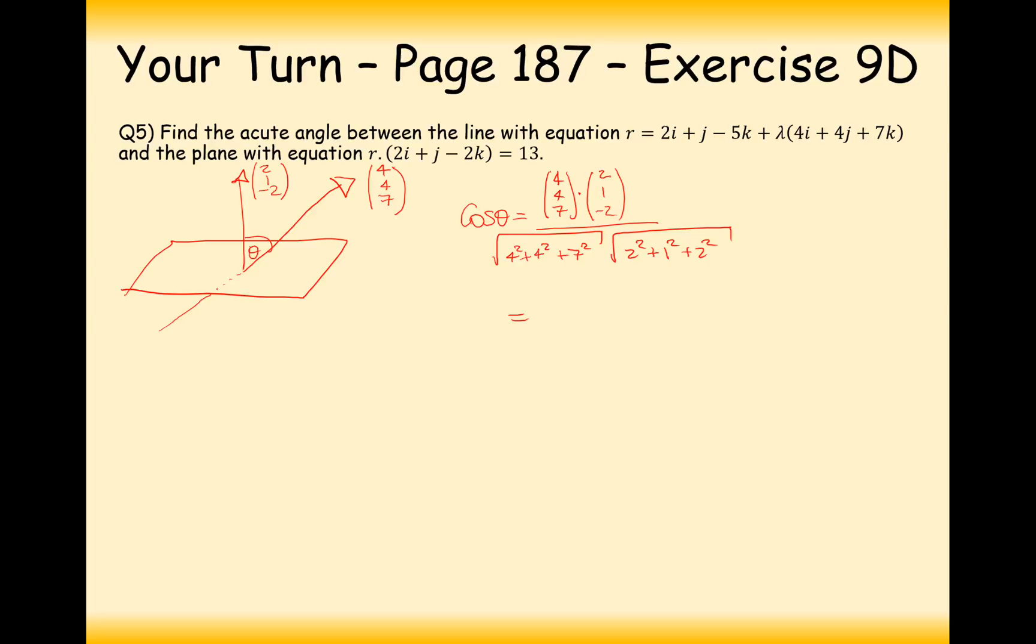On the top, we're going to get 8 plus 4 is 12, minus 14, so that would be minus 2. And then, inside the square roots here, we're going to get the square root of 4 squared plus 4 squared plus 7 squared, which is 9. So, that's the square root of 9, so that would be 81 inside the bracket there.